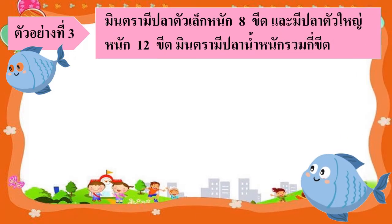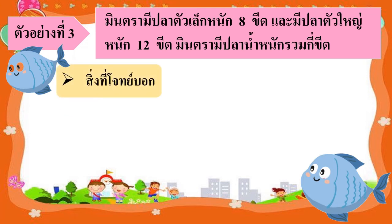ต่อมาเรามาดูตัวอย่างที่ 3 กันเลย มินตรามีปลาตัวเล็กหนัก 8 ขีด และมีปลาตัวใหญ่หนัก 12 ขีด มินตรามีปลาน้ำหนักรวมกี่ขีด ก่อนอื่นนะคะ คุณน้องจะพาเด็กๆไปวิเคราะห์โจทย์ปัญหากันก่อน สิ่งที่โจทย์บอกคืออะไร